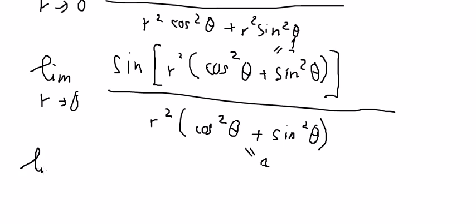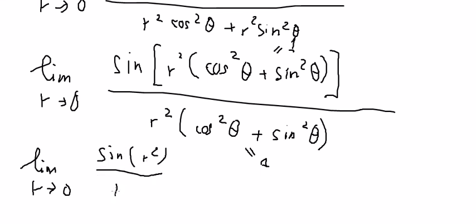As R goes to zero, we get sine of R squared over R squared. If we put zero in here, we get zero over zero, which is an indeterminate form.